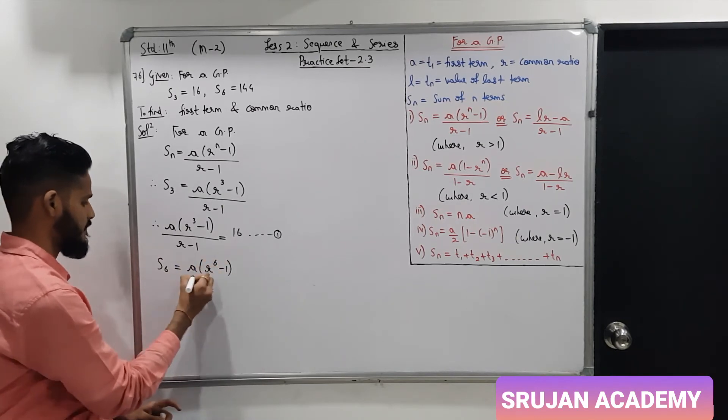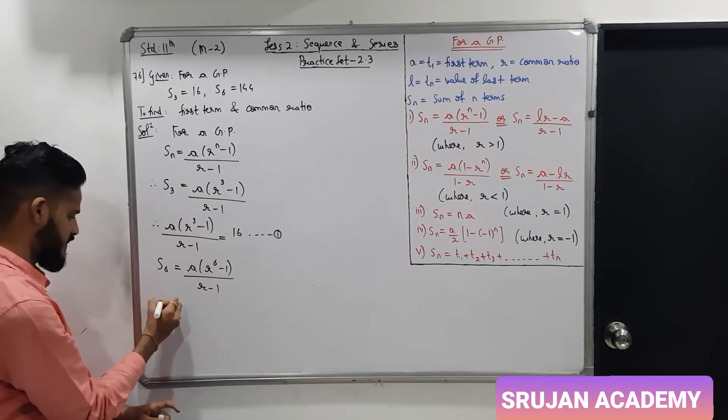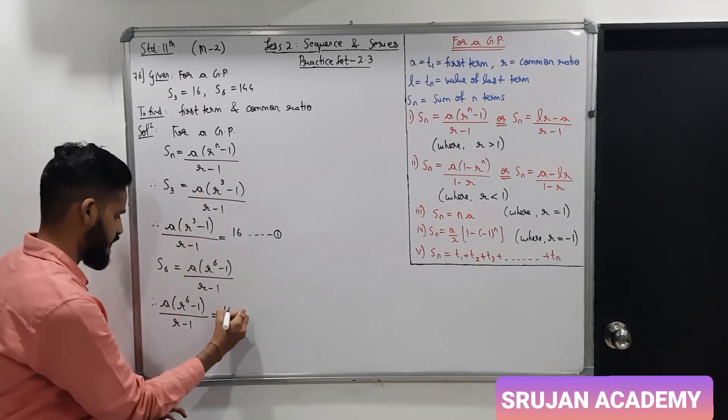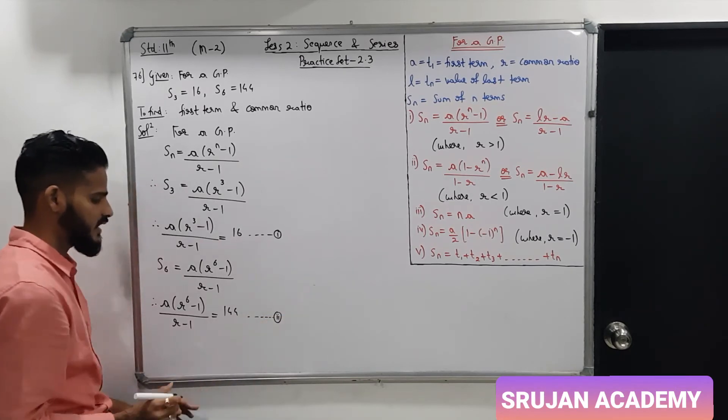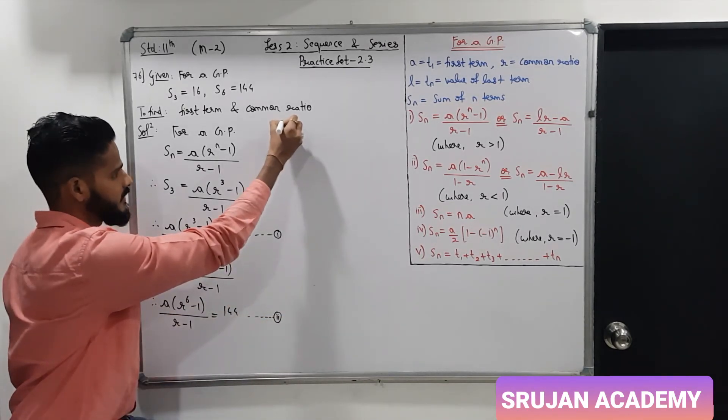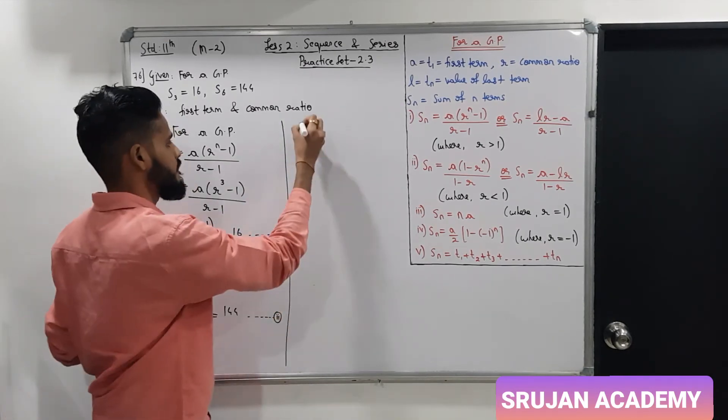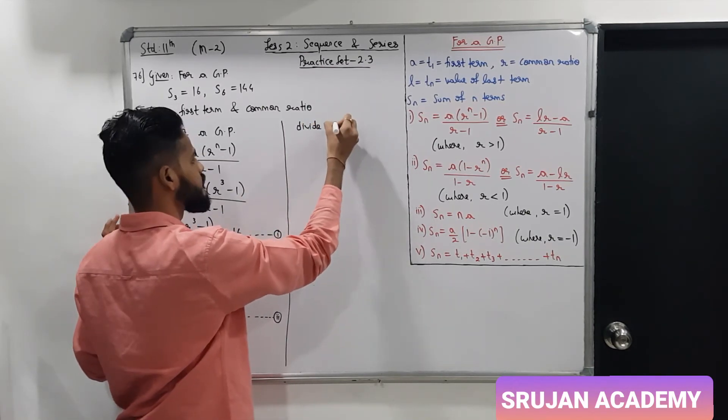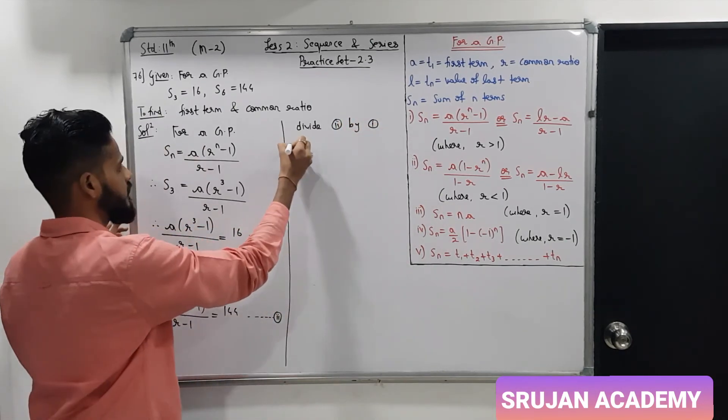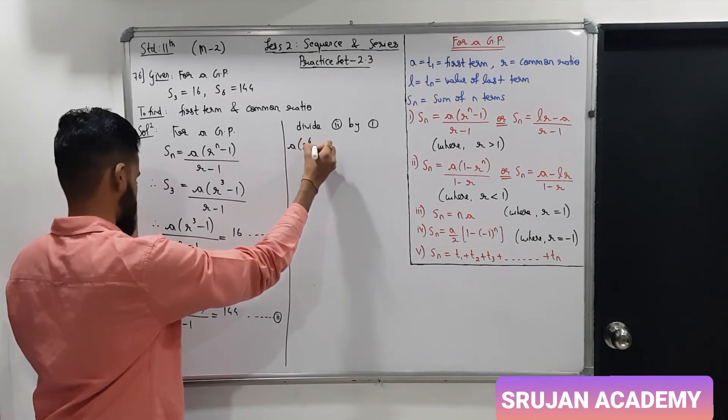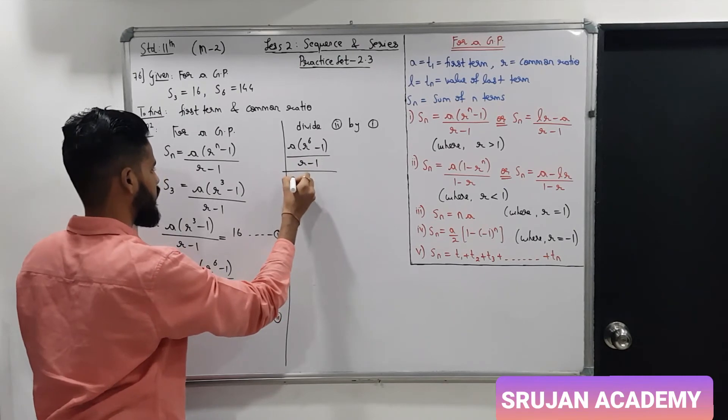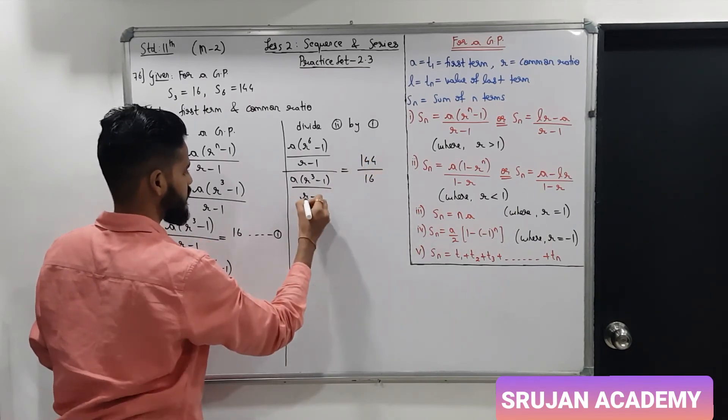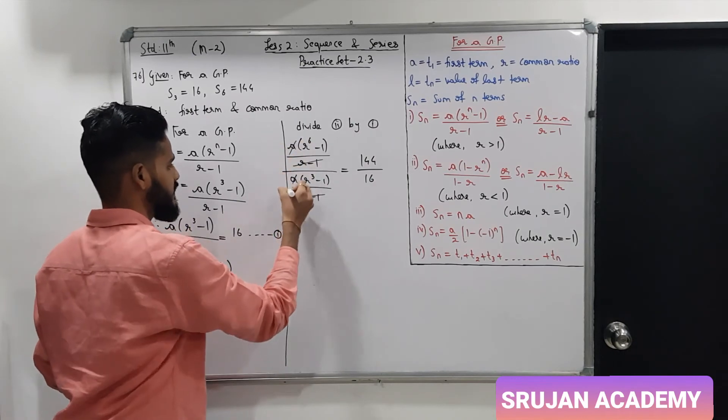Similarly, a into R raise to 6 minus 1 upon R minus 1, S6 is 144. Dividing equation 2 by equation 1, a into R raise to 5 upon a into R raise to 2 is 144 upon 16. So, R minus 1 cancel, a cancel.